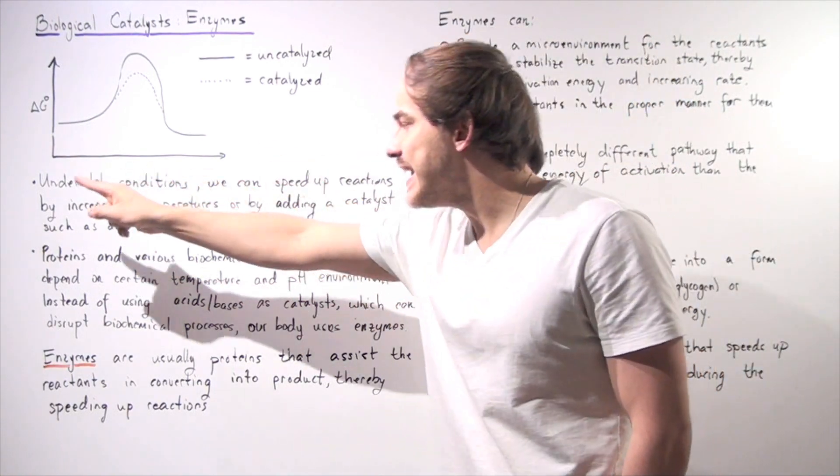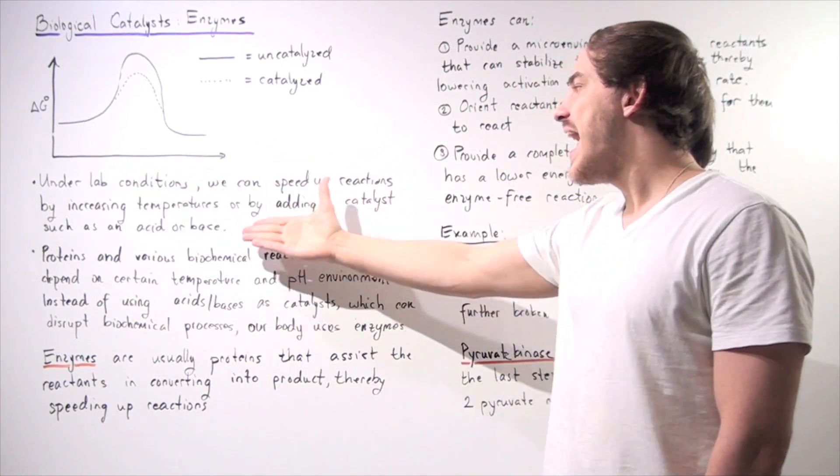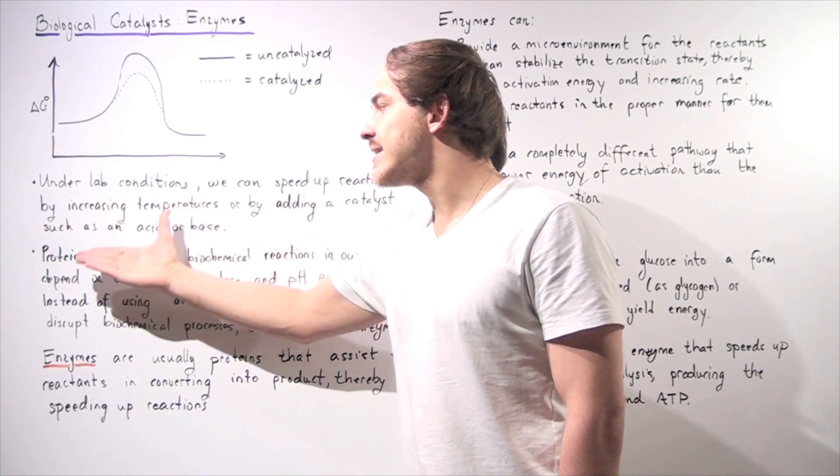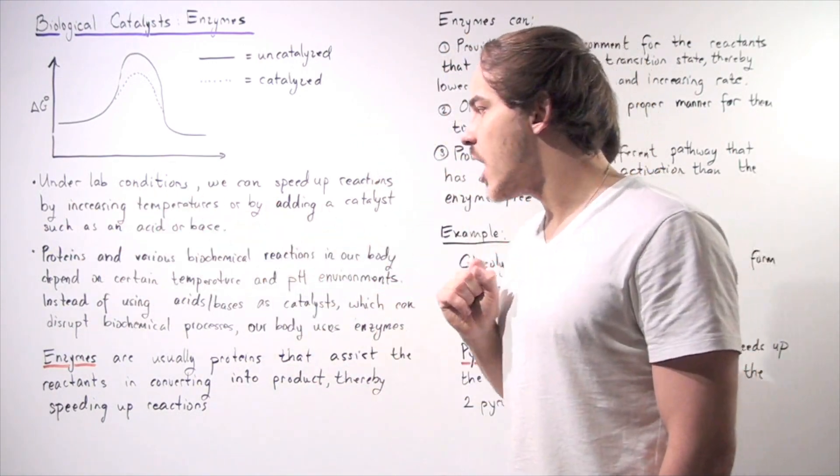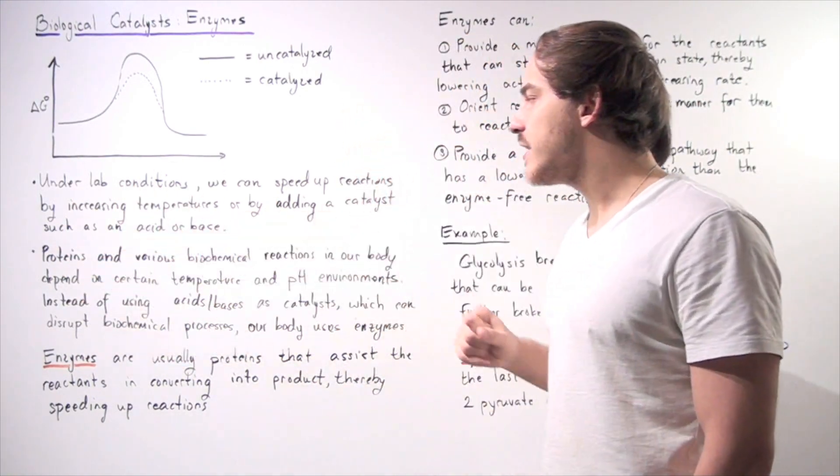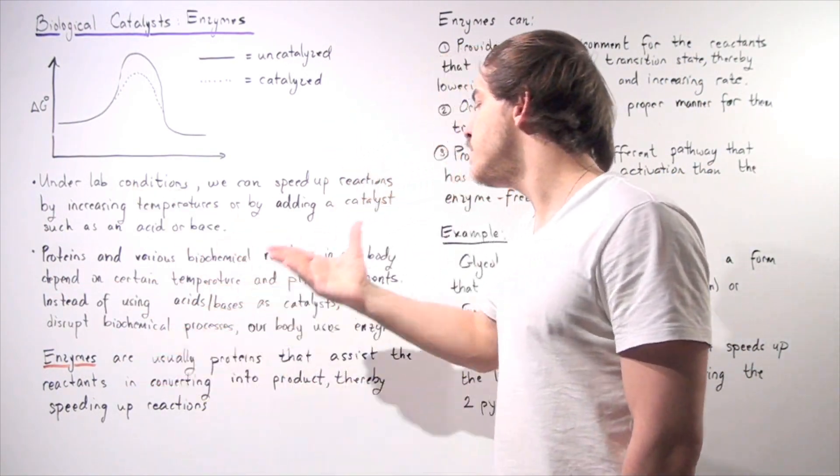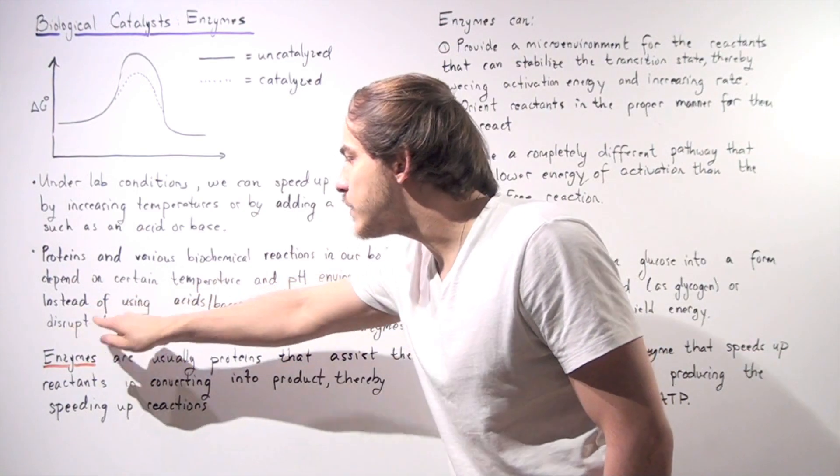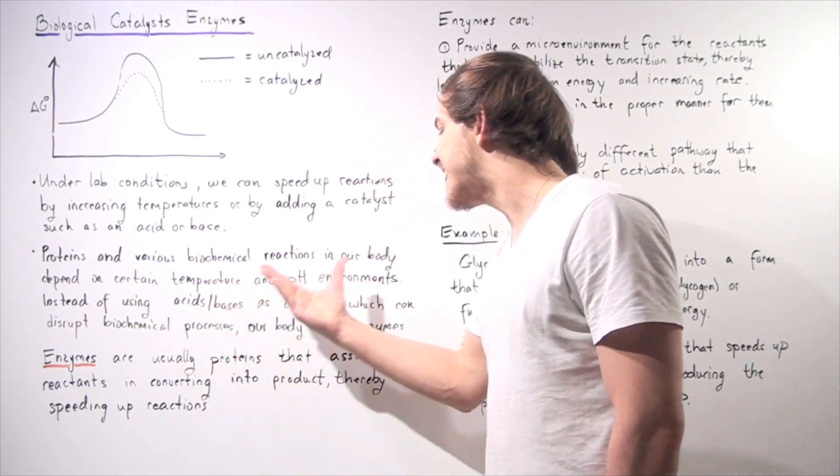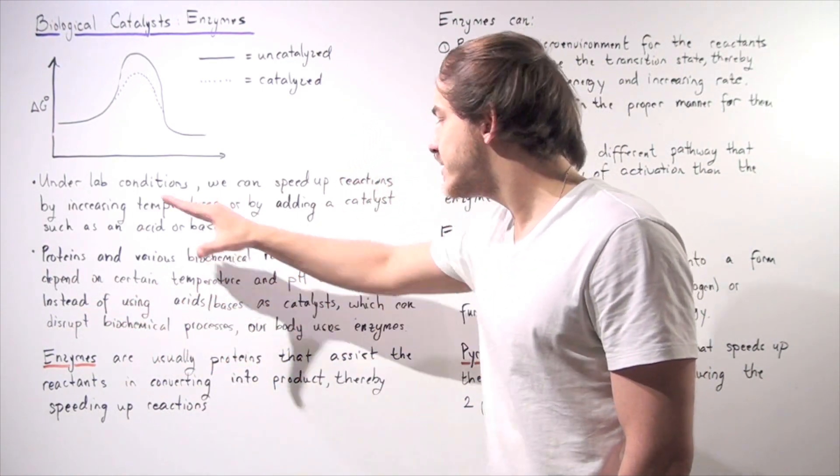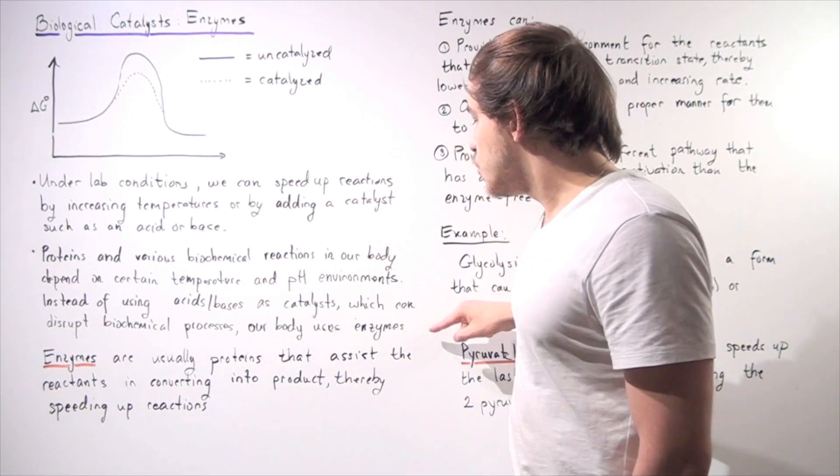Once again, under lab conditions, we can speed up reactions by increasing temperatures or by adding catalysts such as an acid or a base. On the other hand, proteins and various biochemical reactions in our body depend on certain temperature and pH environments. Instead of using acid bases as catalysts, and instead of increasing temperatures, we use enzymes.